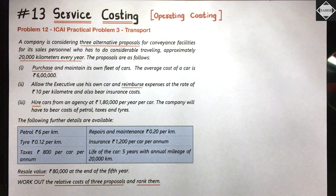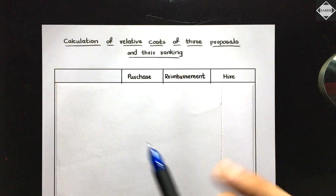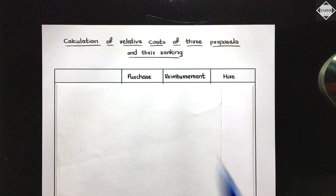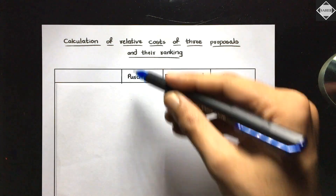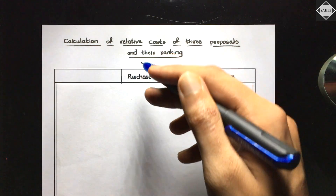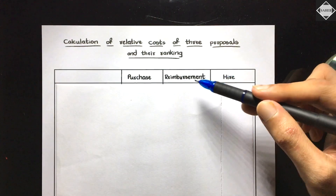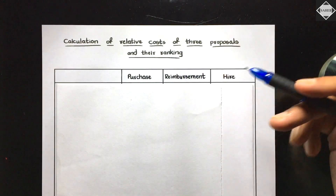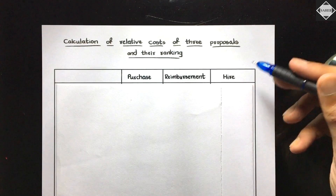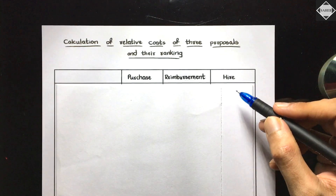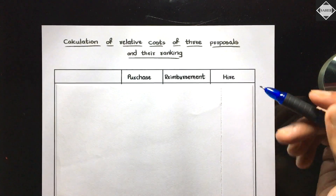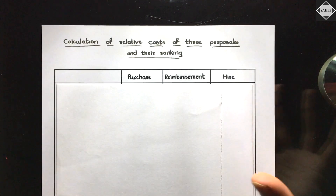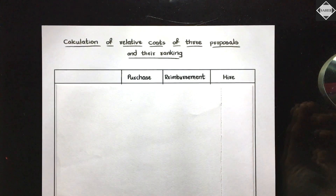Now let's look at the solution. We have three alternatives: first, purchase our own car; second, reimburse the employee; third, hire the car. We set up three columns, one for each option. Since all data is given per year, we will solve this question on a per annum basis.